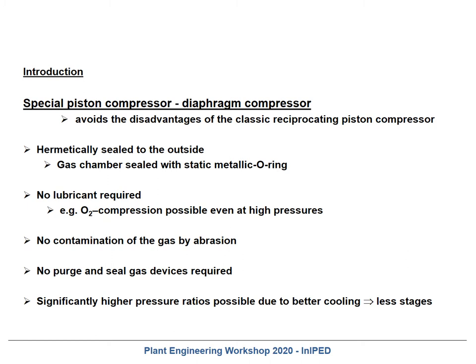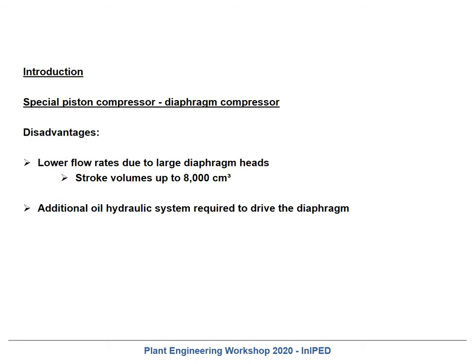The only part that may wear is the diaphragm itself, and this diaphragm is made of steel. Significantly higher pressure ratios are possible due to much better cooling, and therefore in general you can achieve compression tasks with fewer stages. Of course there are some disadvantages — you typically have lower flow rates compared to classical reciprocating compressors, due to the large diaphragm head. There is a limit to the outer diameter of this head, and the steel diaphragm has a limit in terms of maximum possible elongation or stretch. In addition, you need a hydraulic system to drive the diaphragm compressor.